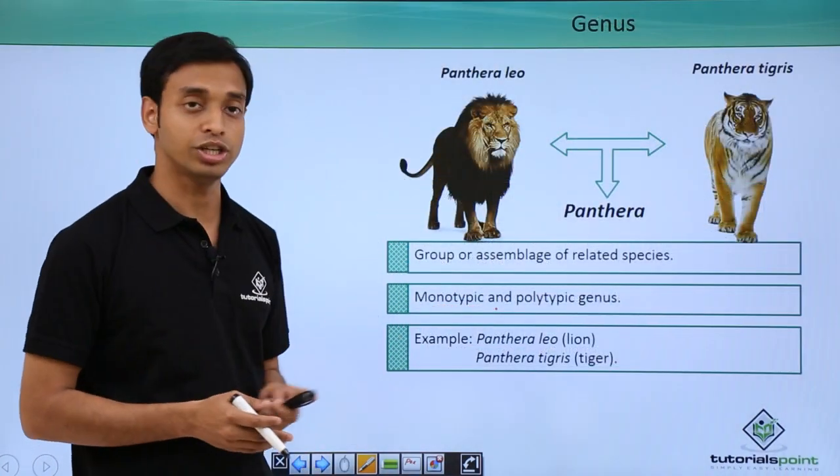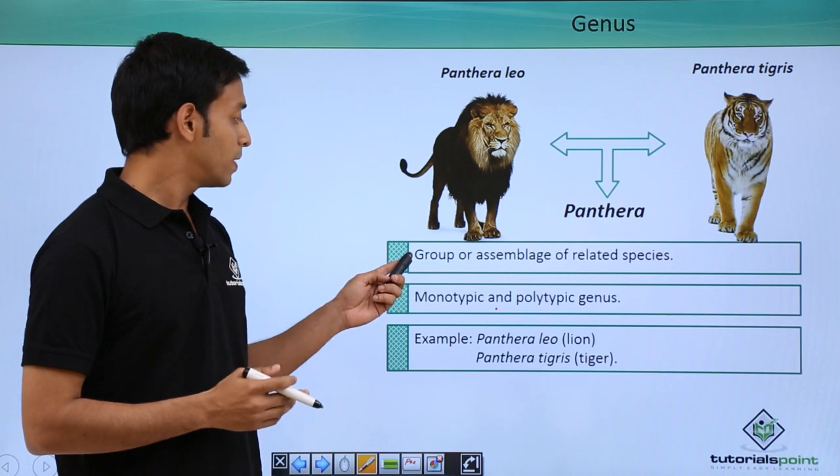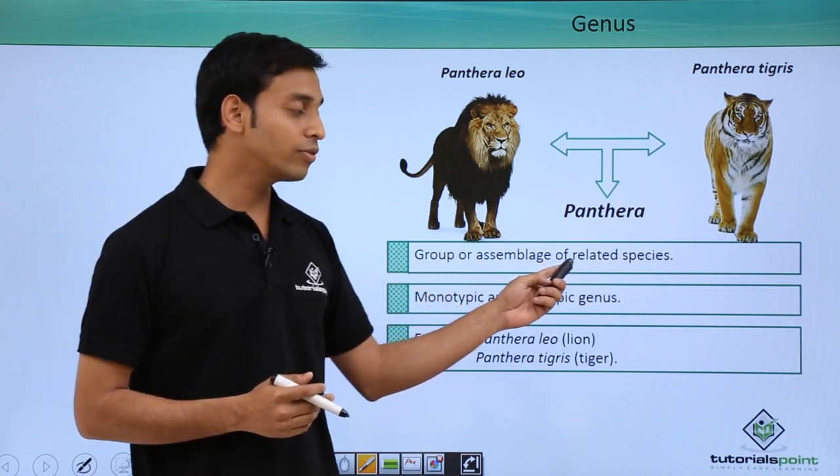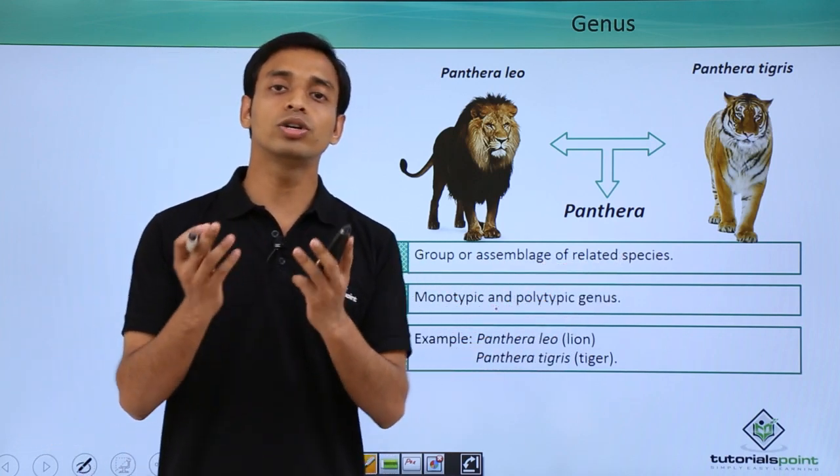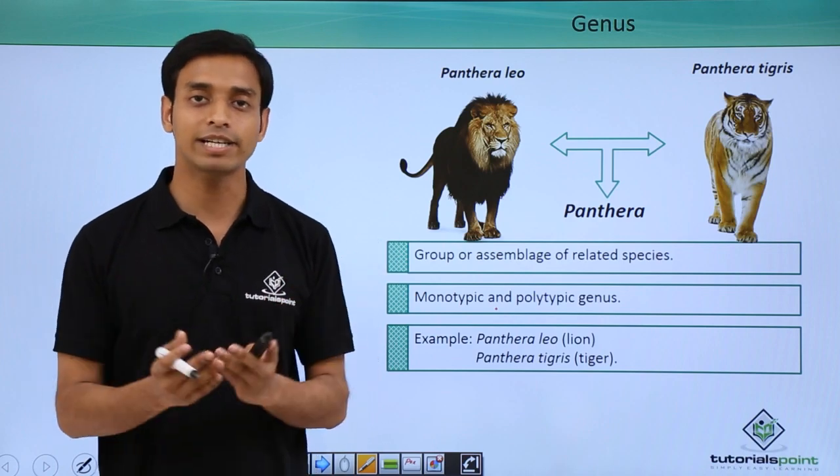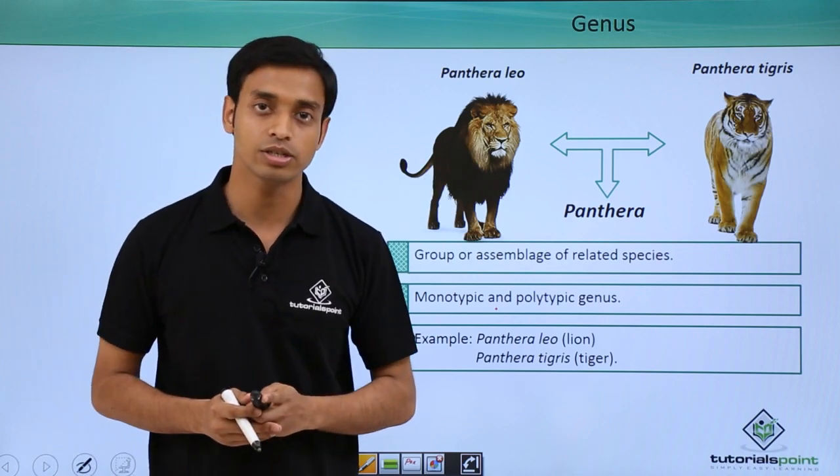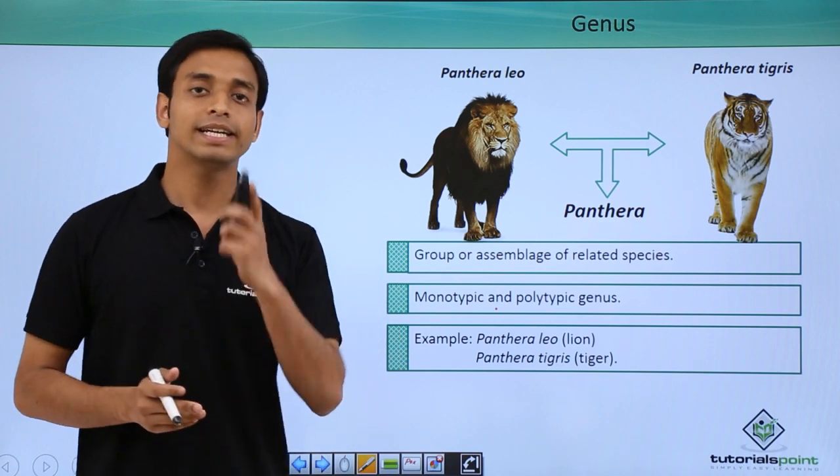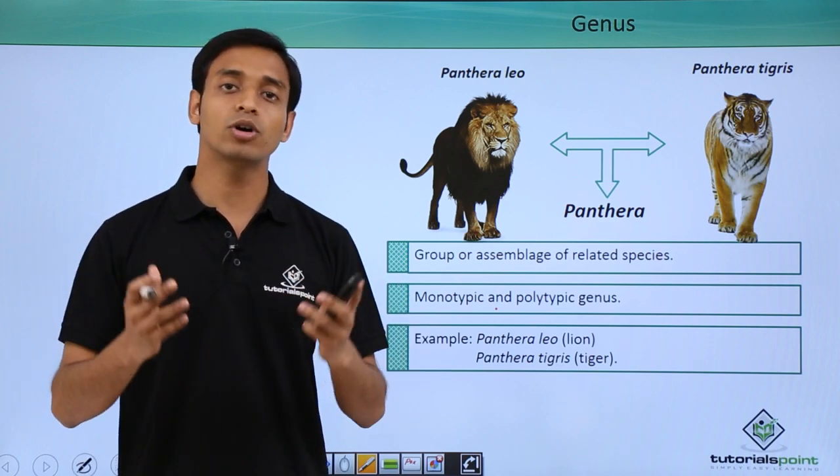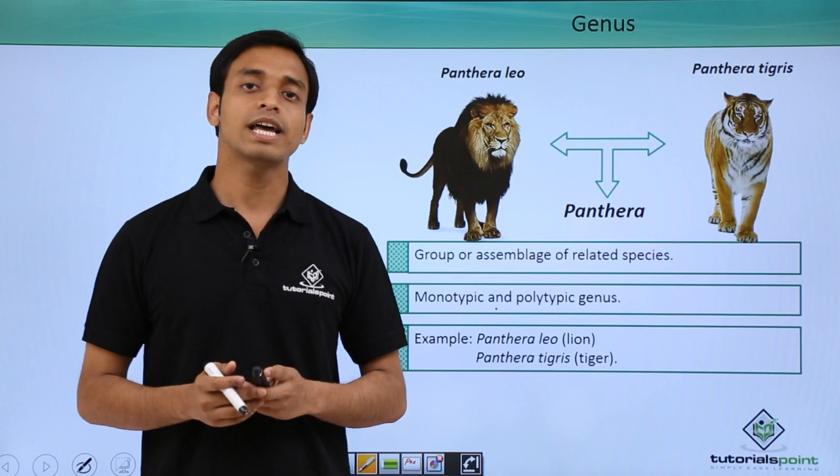The next category we are going to talk about is genus. What is genus? Genus is a group or assemblage of related species. That is, two different species, if they have related characteristics, they can be included in a particular or in a single genus. It is not mandatory that every genus will have a number of species.